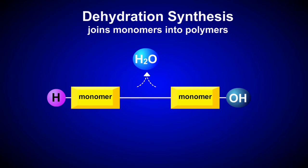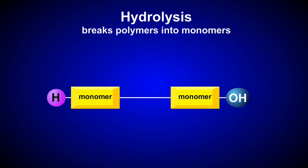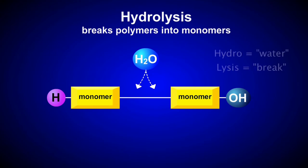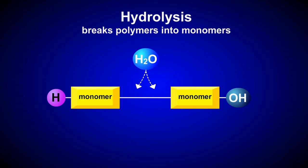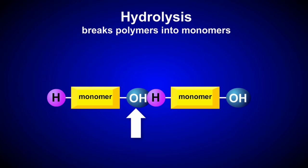Hydrolysis is the opposite of a dehydration synthesis reaction. During a hydrolysis reaction, a polymer is reduced to its monomer subunits by the addition of water. In fact, the word hydrolysis literally means to break water. The hydroxyl group from a water molecule attaches to one monomer, and the remaining hydrogen attaches to the other monomer. In other words, water is used to break the bond holding monomers together.